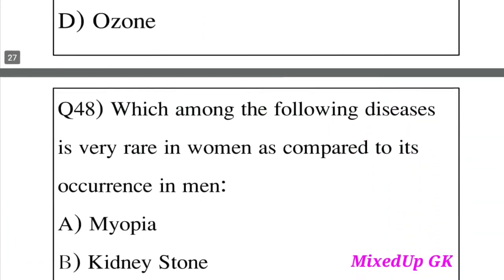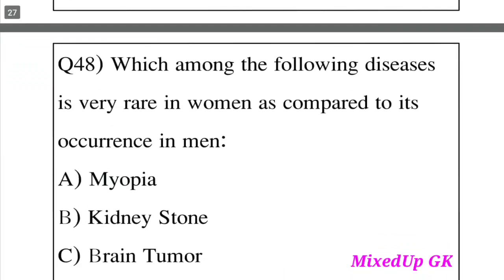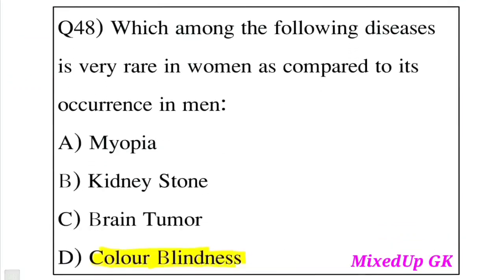Question 48: Which among the following diseases is very rare in women as compared to its occurrence in men? The answer is Colorblindness. Colorblindness is very rare in women compared to men.